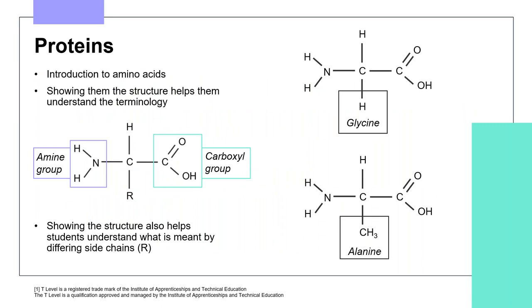To help students understand, I would start with an introduction to the structure of amino acids using the language that they are the monomers that make up proteins. You could also explain that monomers are the repeating molecules within large chains that make up many organic molecules. I would show them the structure to help them understand the amine group, carboxyl group and side chain, and show a couple of examples such as glycine and alanine to help contextualise the different R groups.